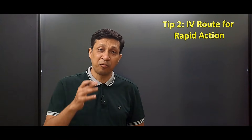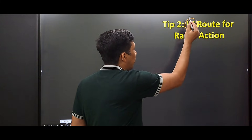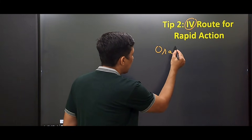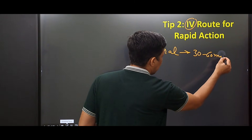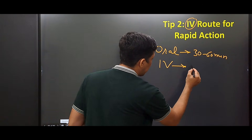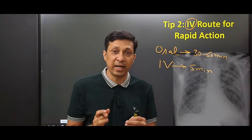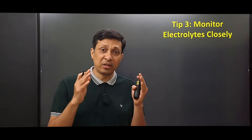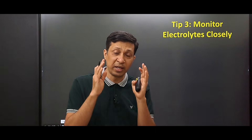The second tip is that whenever there is an emergency, always use the IV route. When you give this drug orally, the onset of action is 30 to 60 minutes. But when you give it IV, the action starts in 5 minutes. So when there is an emergency like pulmonary edema, we always use the intravenous route.